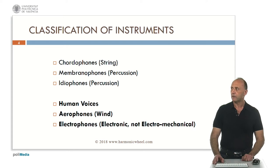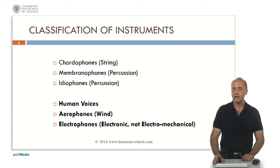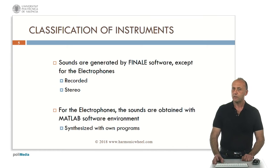From the classification of instruments, in another presentation we studied the chordophones or string instruments, membranophones which are percussion, and idiophones which are also percussion. In this presentation we are going to analyze the human voices, the aerophones — that is wind instruments — and the electrophones. Here we will consider only pure electronic instruments and not electromechanical ones, which will be classified in the other groups. Except for the electrophones, all the sounds are generated by Finale software, and for the electrophones the sounds were obtained with MATLAB, synthesized with our own programs.